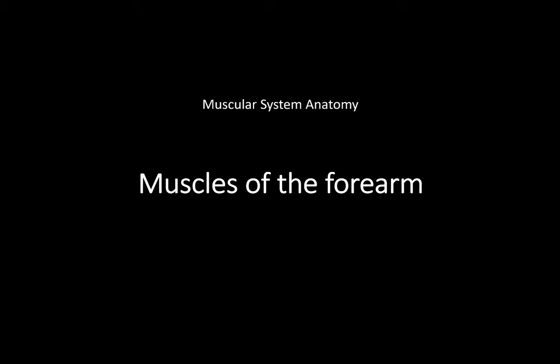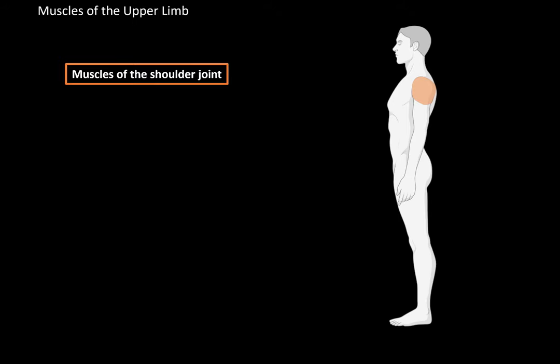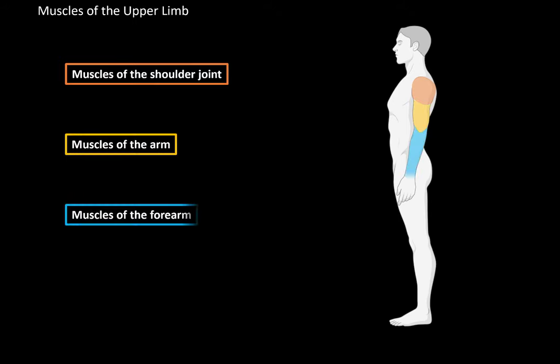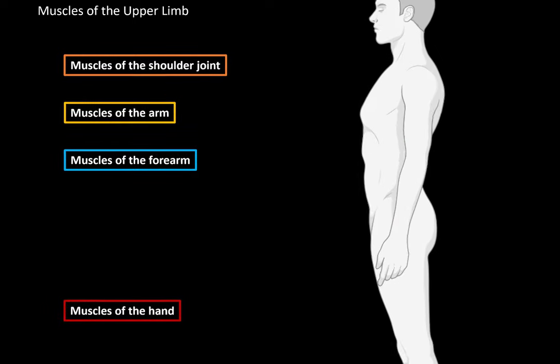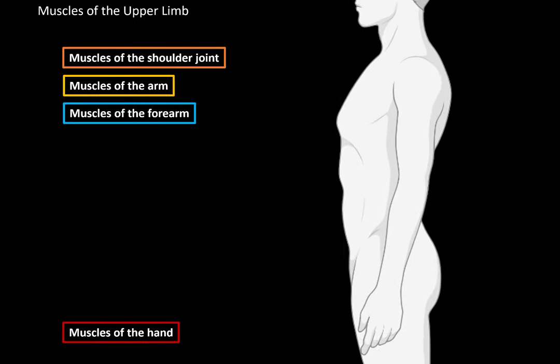What's up, Merite here. Now we will be covering the muscles of the forearm, which are a part of the upper limb. The muscles of the upper limb are divided into 4 parts according to their anatomical location: the muscles of the shoulder joints, the muscles of the arm, muscles of the forearm, and muscles of the hand. The muscles of the forearm are what we are going to focus on.